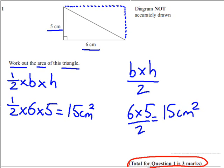Question 1 is 3 marks. You get 1 mark for the calculation, 1 mark for seeing 15, and 1 mark for the correct unit.